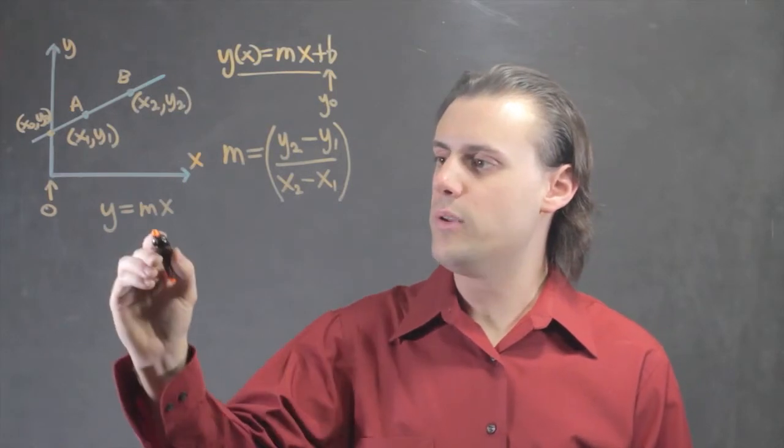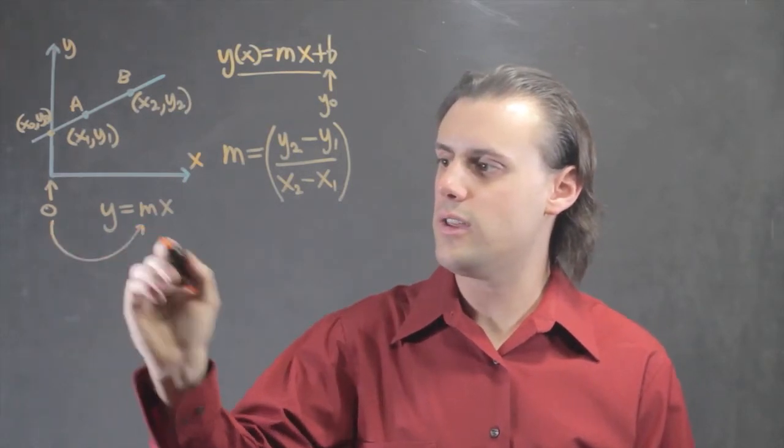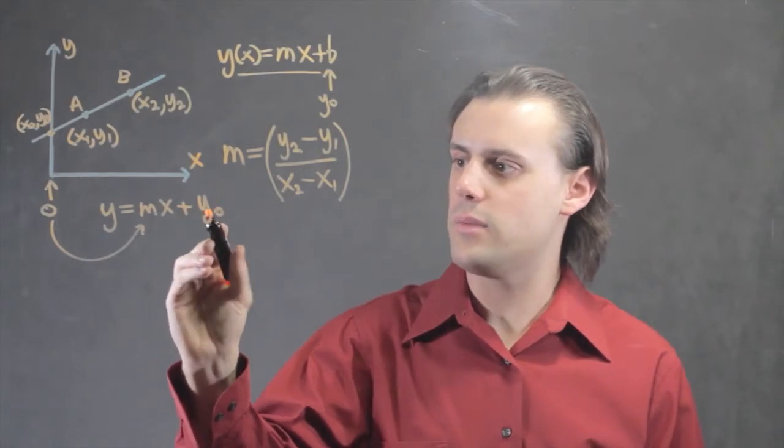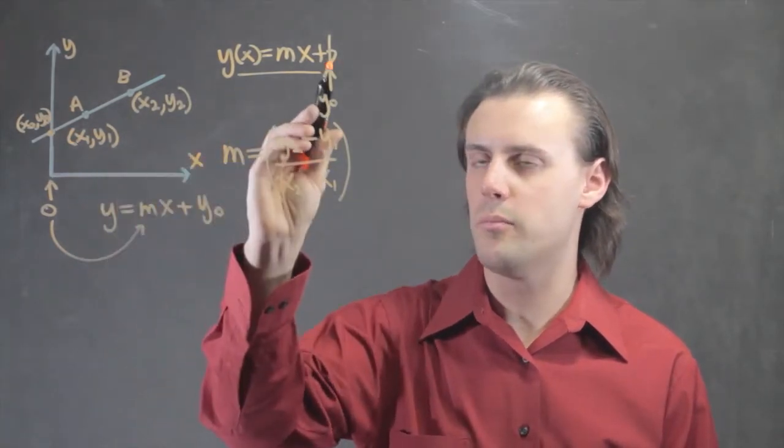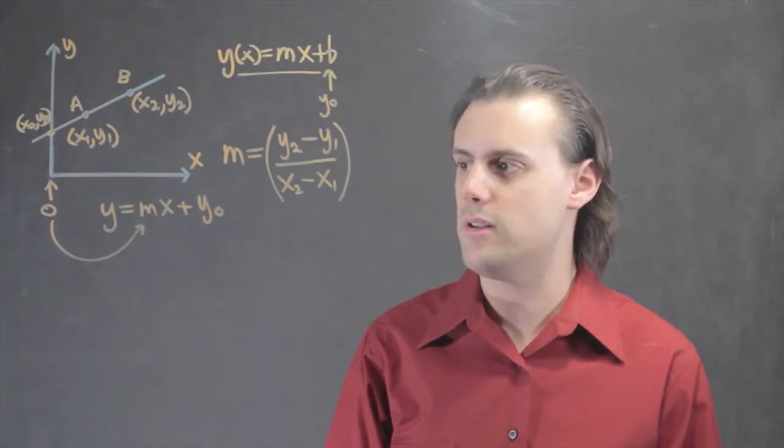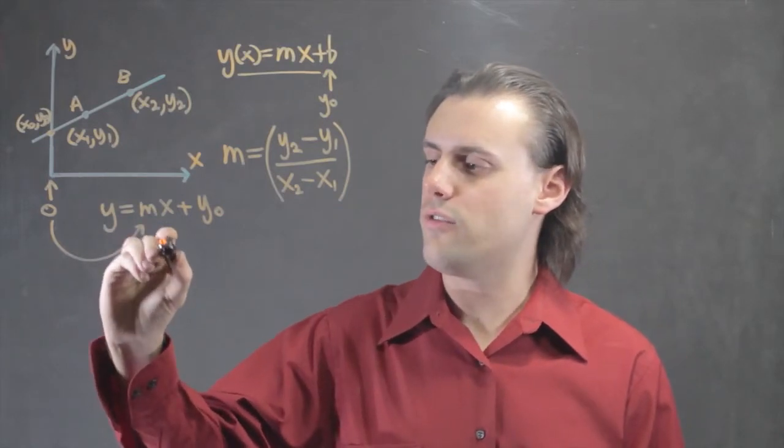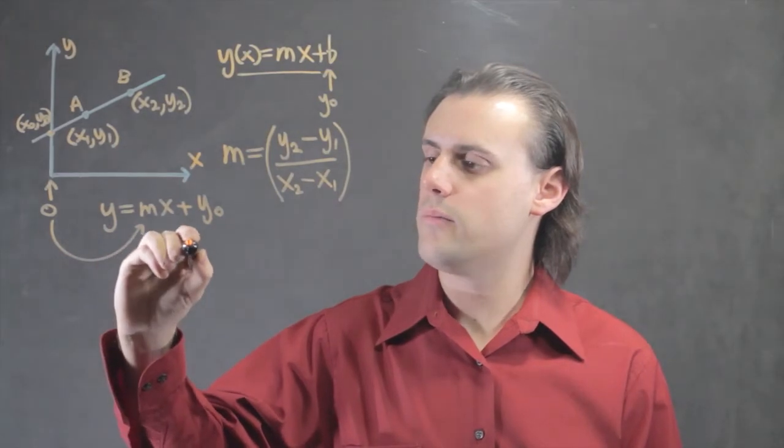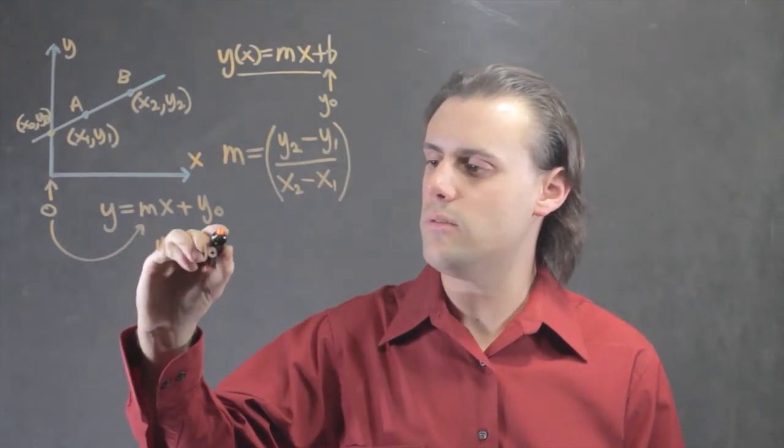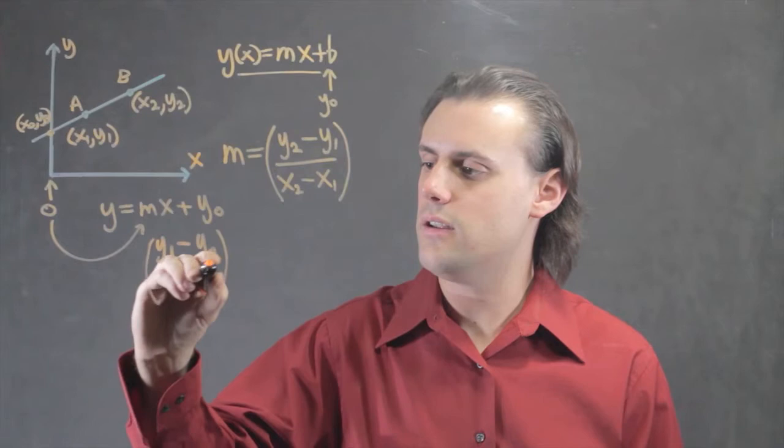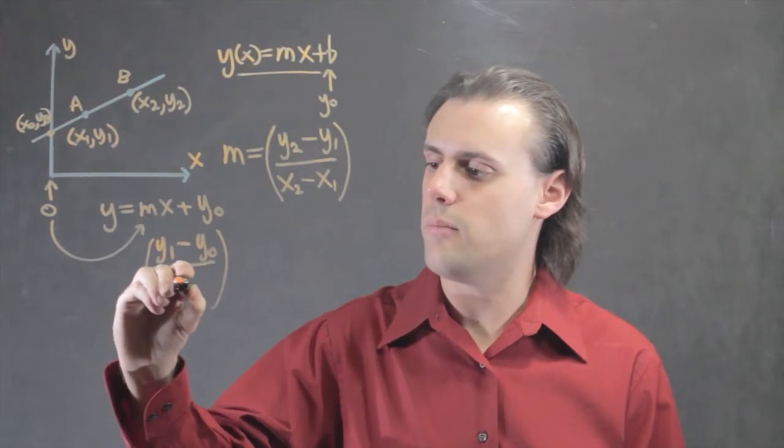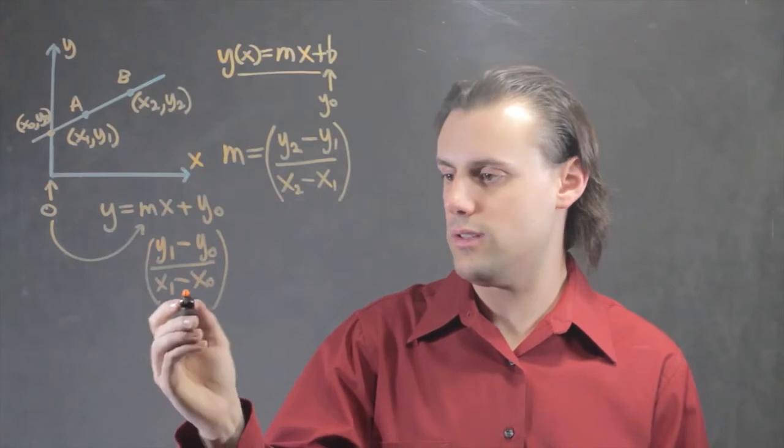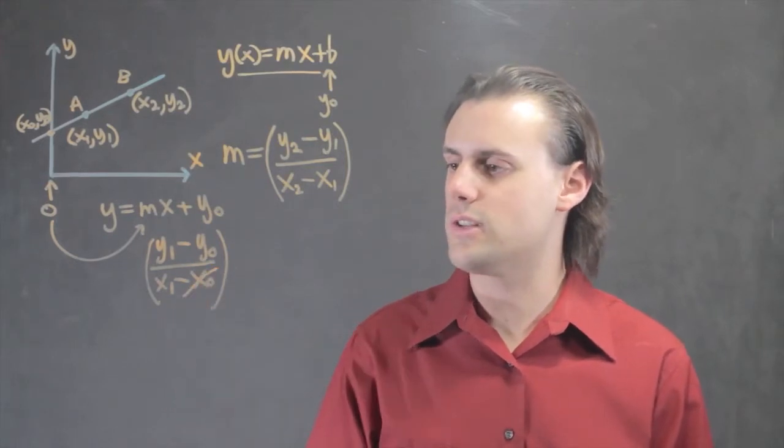So, I can plug that directly into the equation I have here and write y naught, because y naught is my b, it is my y-intercept. And so, for the slope, I'll have y1 minus y0 divided by x1 minus x0. I know that my x0 is equal to 0, so I can just cancel that out.